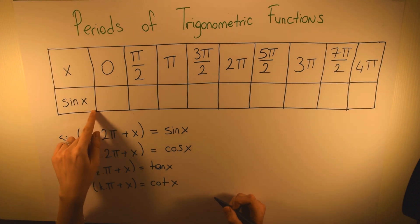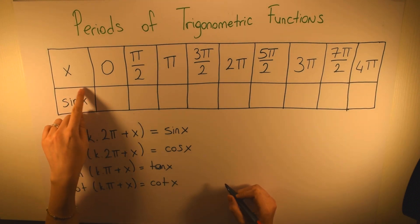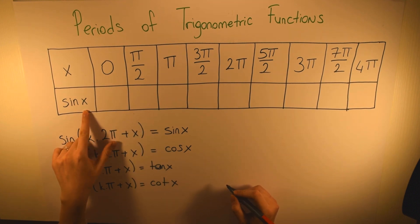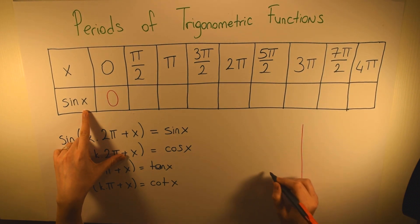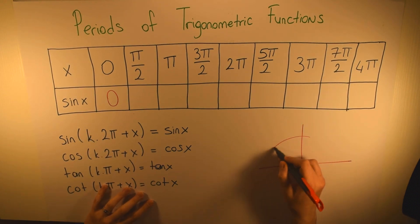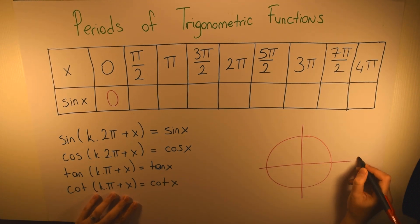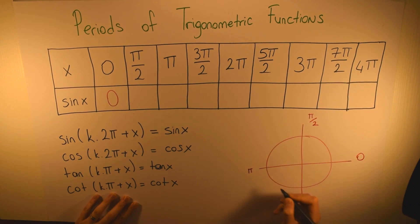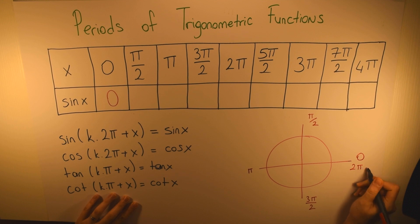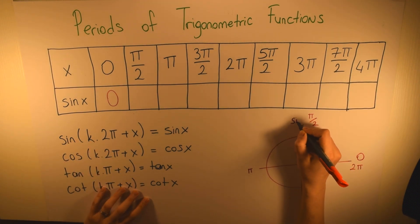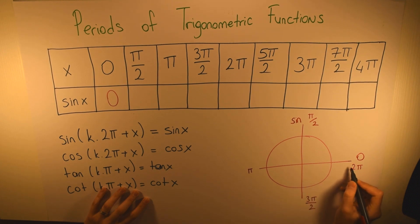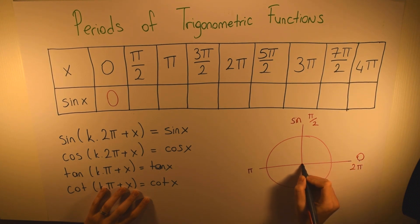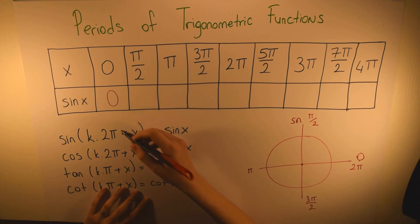Let's look at our sin x function. When x is equal to zero, our sin value is equal to zero. Let me draw our unit circle here — it's better to understand. So here we have 0 degrees, π/2, π, 3π/2, and 2π which is equal to 360 degrees. This is our sin axis. When our angle is equal to zero, our sin value is equal to zero.